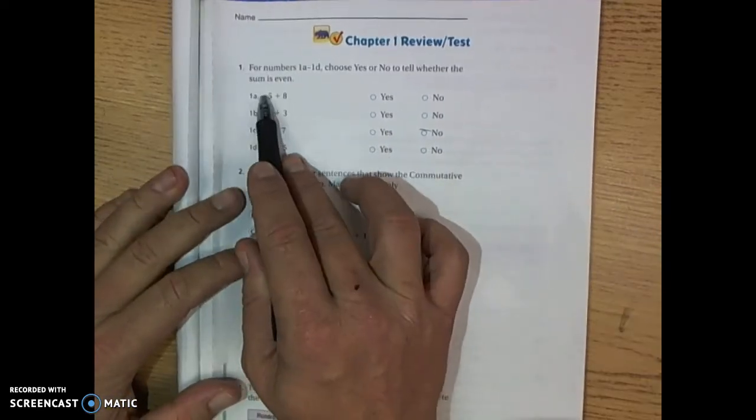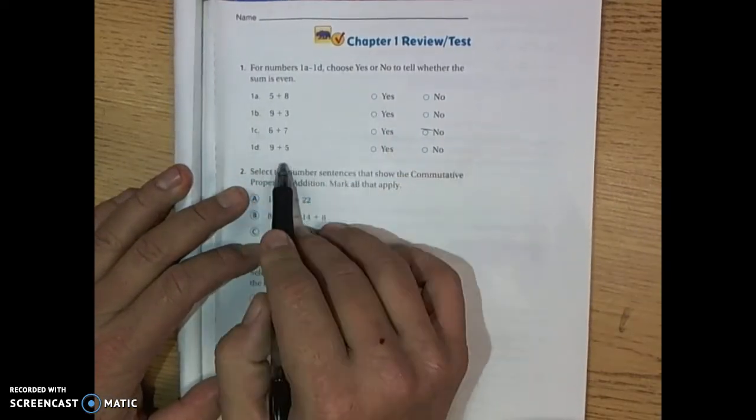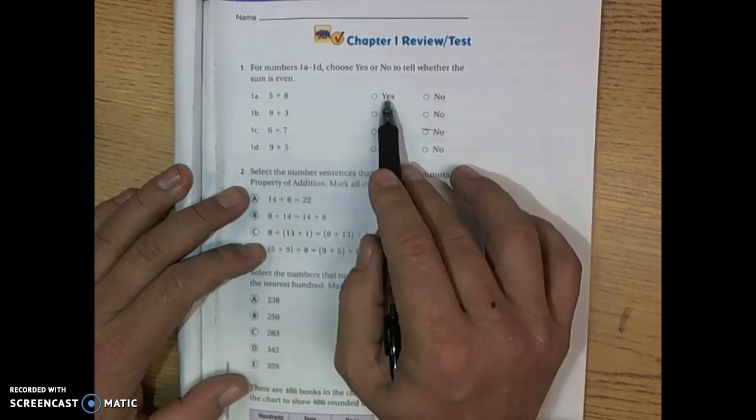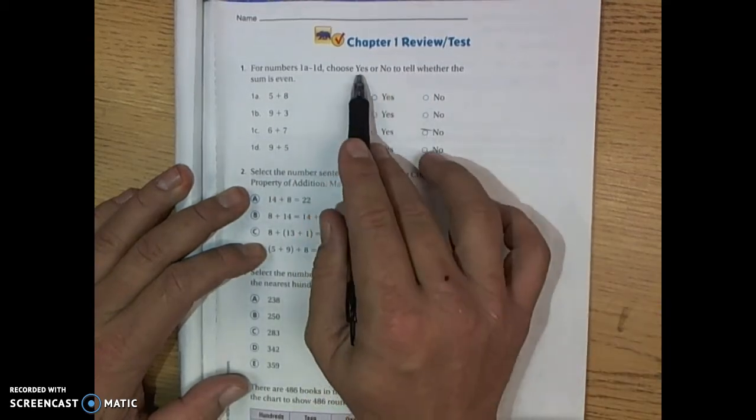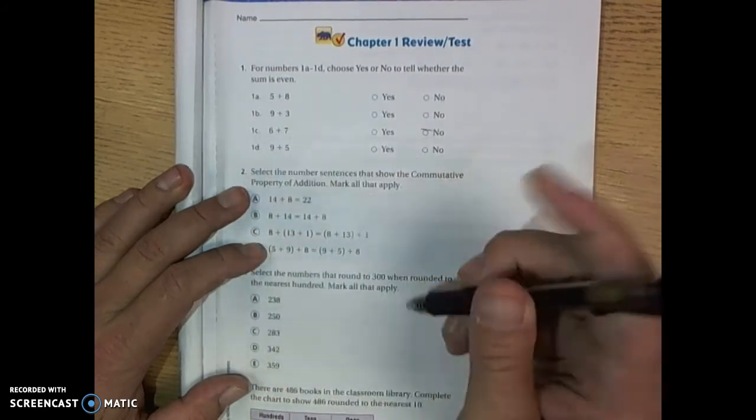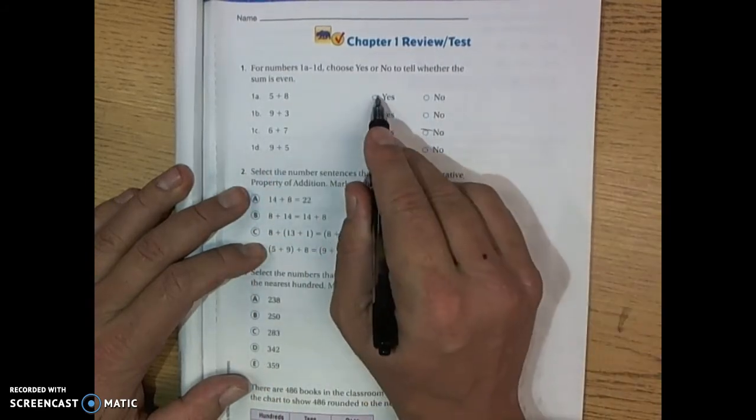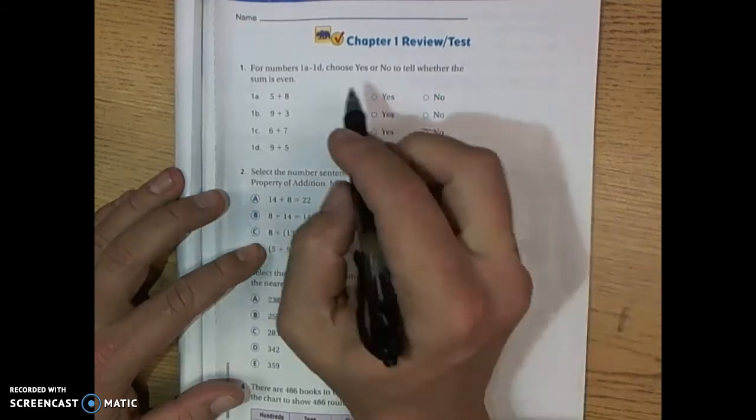For number 1, 1a through 1d, you're going to need to add up these numbers and just tell whether it is even or odd. So choose yes or no to tell whether the sum is even. You're going to circle yes if it's even and bubble in no if the total is odd.